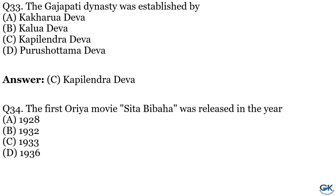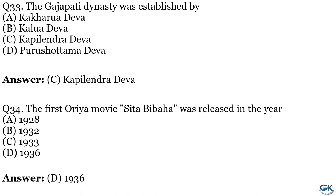Question No. 34: The first Odia movie, Sita Bibaha, was released in which year? Option A: 1928. Option B: 1932. Option C: 1933. Option D: 1936. The answer is 1936.